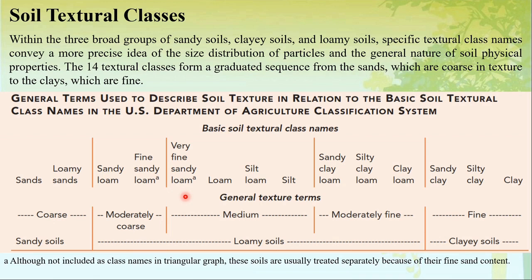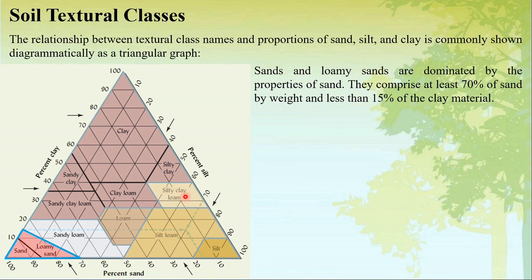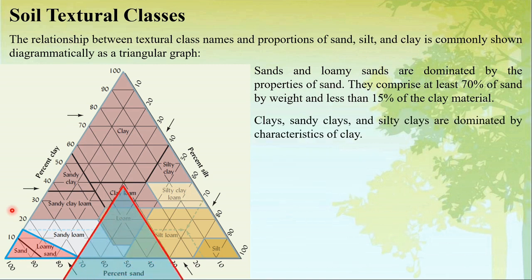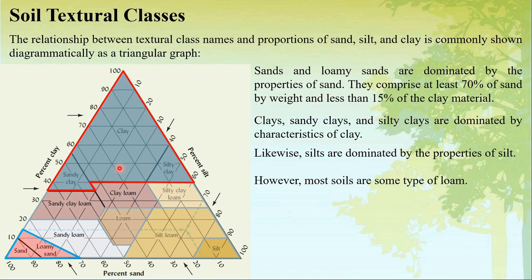The relationship between textural class names and properties of sand, silt, and clay is commonly shown diagrammatically as a triangular graph. Sand and loamy sands are dominated by the properties of sand, as they comprise at least 70% sand by weight and less than 15% clay. Similarly, clay, sandy clay, and silty clay are dominated by the characteristics of clay, and silts are dominated by the properties of silt.